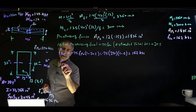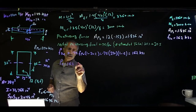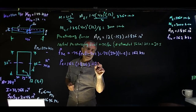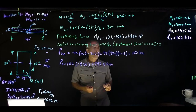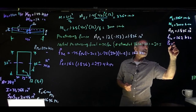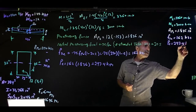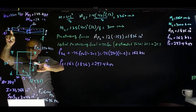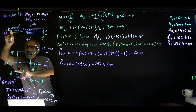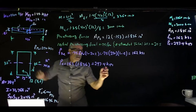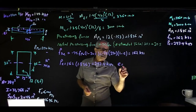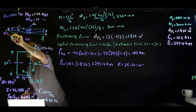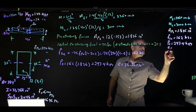The effective prestress force after losses is PE = 162 ksi × 1.836 in² = 297.4 kips. The distance from the centroid to the bottom is 16 inches, and the eccentricity e = 26 − 16 = 10 inches. So PE = 297.4 kips and e = 10 inches.